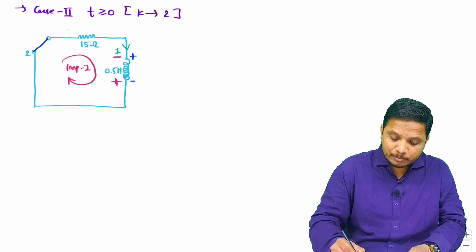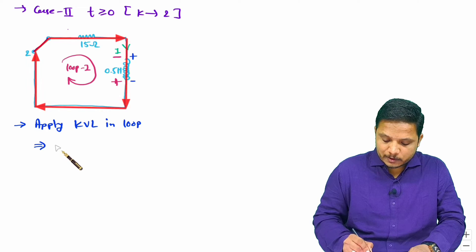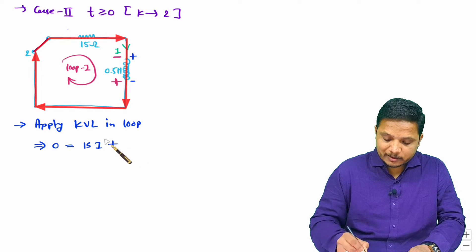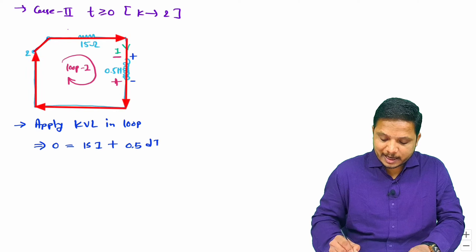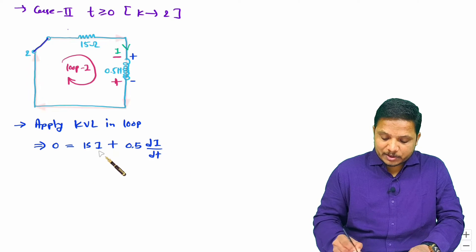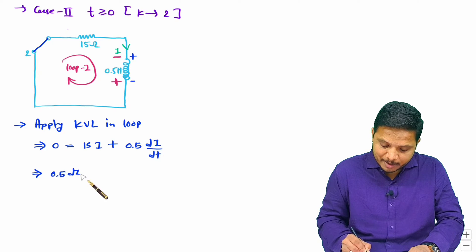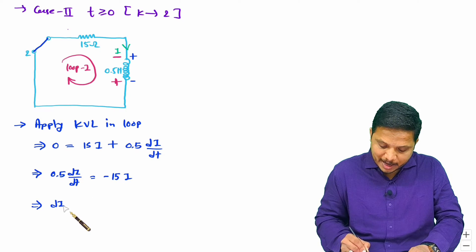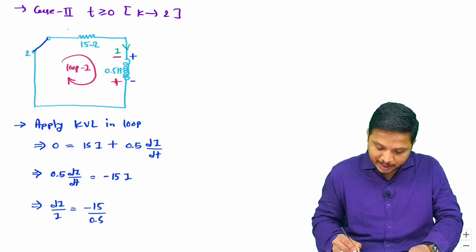Applying KVL in this loop, there is no voltage source, so we write 0 equals the voltage drop across the 15 ohm resistor, which is 15I, plus the voltage across the inductance, which is L·di/dt. Here inductance is 0.5, so it is 0.5·di/dt. Rearranging: 0.5·di/dt equals minus 15i, and then di/i equals (minus 15 / 0.5)·dt, which gives di/i equals minus 30·dt.